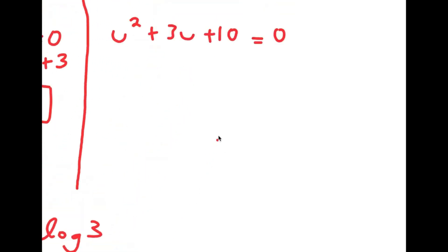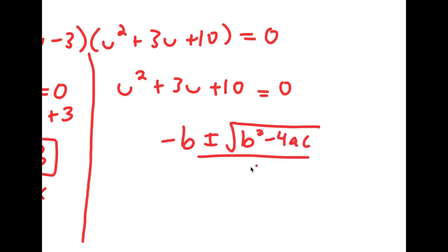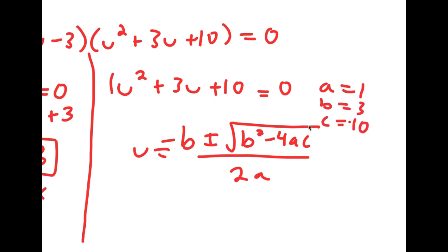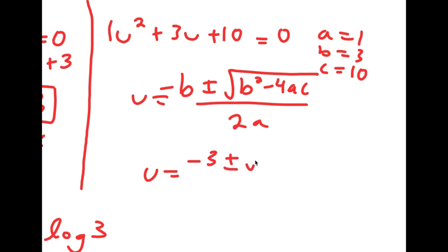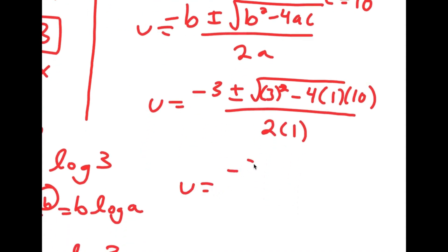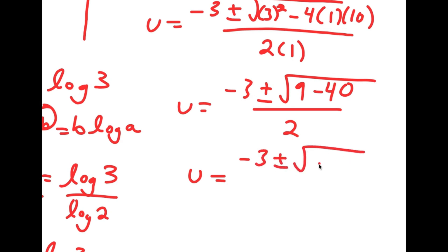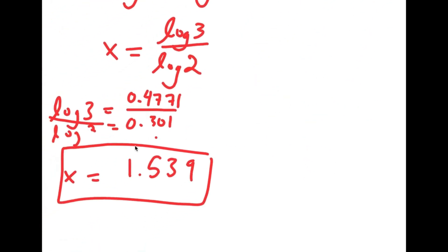Going back to u squared plus 3u plus 10 equals 0, I'll use the quadratic formula: negative b plus or minus the square root of b squared minus 4ac, all over 2a. Here a is 1, b is 3, and c is 10. So u equals negative 3 plus or minus the square root of 3 squared minus 4 times 1 times 10, all over 2. That gives negative 3 plus or minus the square root of 9 minus 40 over 2, which is negative 3 plus or minus the square root of negative 31 over 2. Since the square root of a negative number doesn't give real results, my only solution is x approximately equal to 1.539.